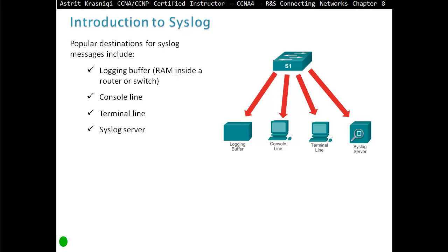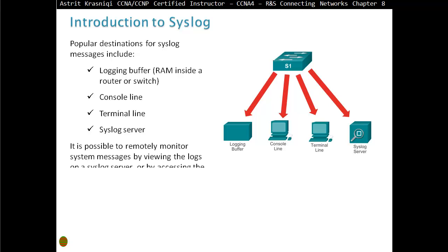What we really like to have is a Syslog server. If we leave it to default, all messages only go to the console line, and you have to be physically connected through the console port on that switch to see the messages as they come in. But in production that's not possible, because you're going to have more than one switch to manage, plus a few routers. You're not going to be able to look at all of them at the same time. So we do want to send them to the Syslog server, where we compile them nicely and can read them at our own time. It is possible to remotely monitor system messages by viewing the logs on a Syslog server or by accessing the device through Telnet, SSH, or through the console port.